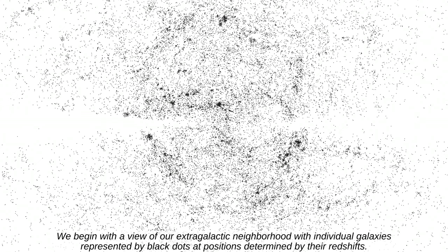We begin with a view of our extragalactic neighborhood, with individual galaxies represented by black dots at positions determined by their red shifts. Concentrations of dots are at the locations of major clusters.